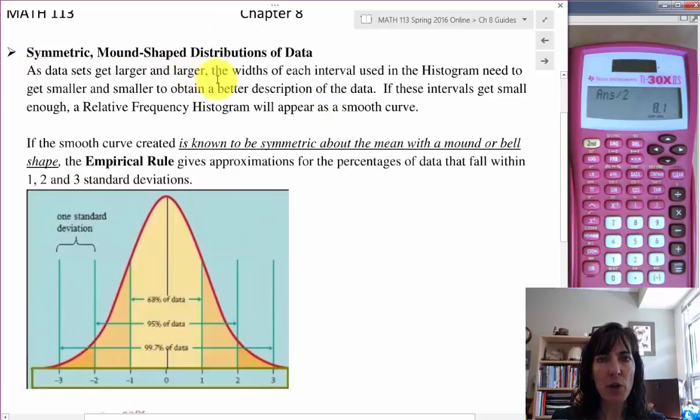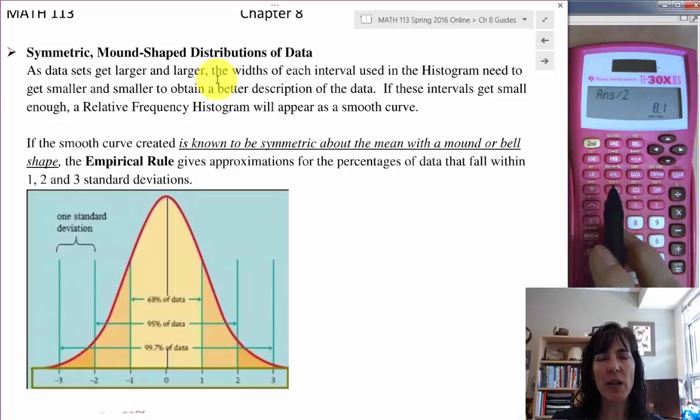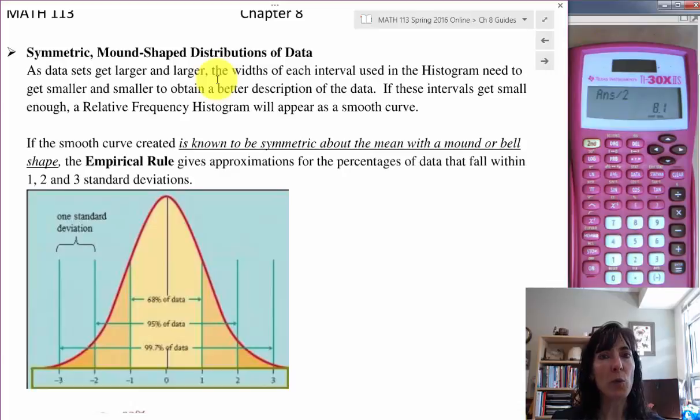And as our data sets get bigger and bigger, we looked at a bunch of small data sets because they're easy to calculate by hand. We went to some a little bit larger and used the calculator to help us, but when we get really large data sets, then our histogram tends to get to this really smooth kind of shape. And we have a better description of our data as our sample size increases.